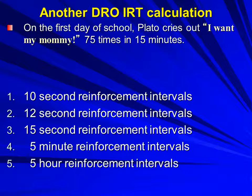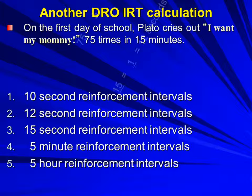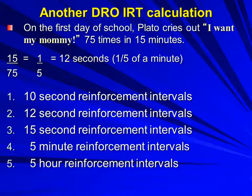On the first day of school, Plato is really missing his mom and cries out 'I want my mommy' 75 times in 15 minutes. You're going to figure out the IRT — the interval that Plato must withhold that behavior in order to get reinforcement. Here's the formula: 15 minutes on top divided by the 75 times it happened. We reduce that fraction and get down to one-fifth. One-fifth of a minute — those time intervals we're using, we had 15 of them — so one-fifth of a minute is 12 seconds.